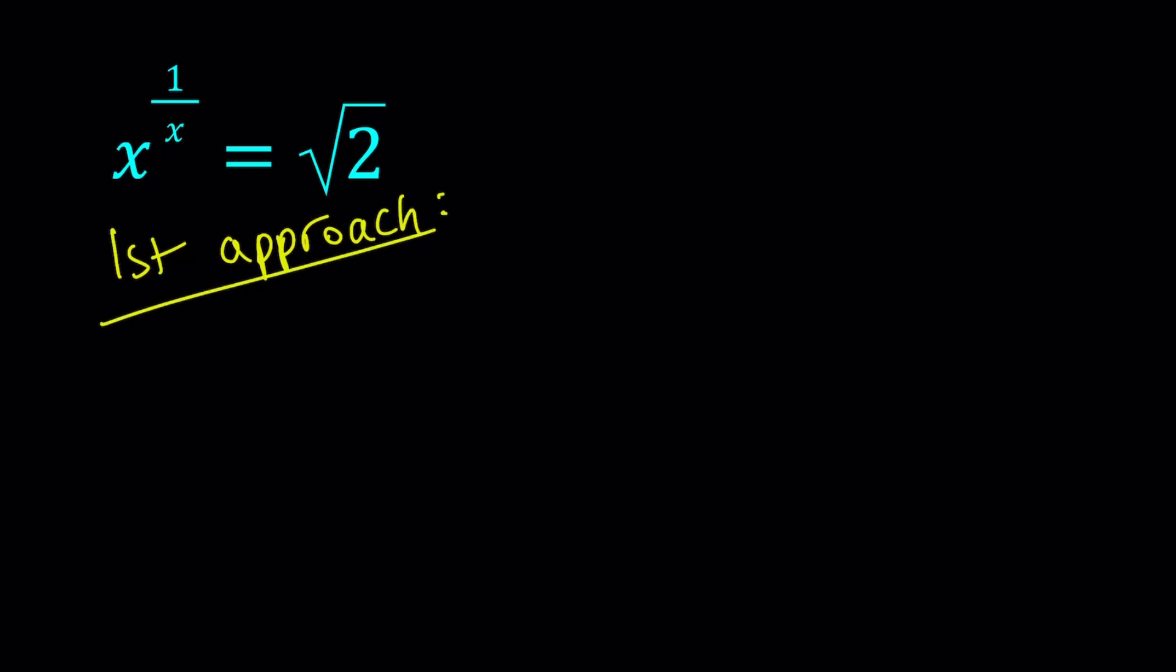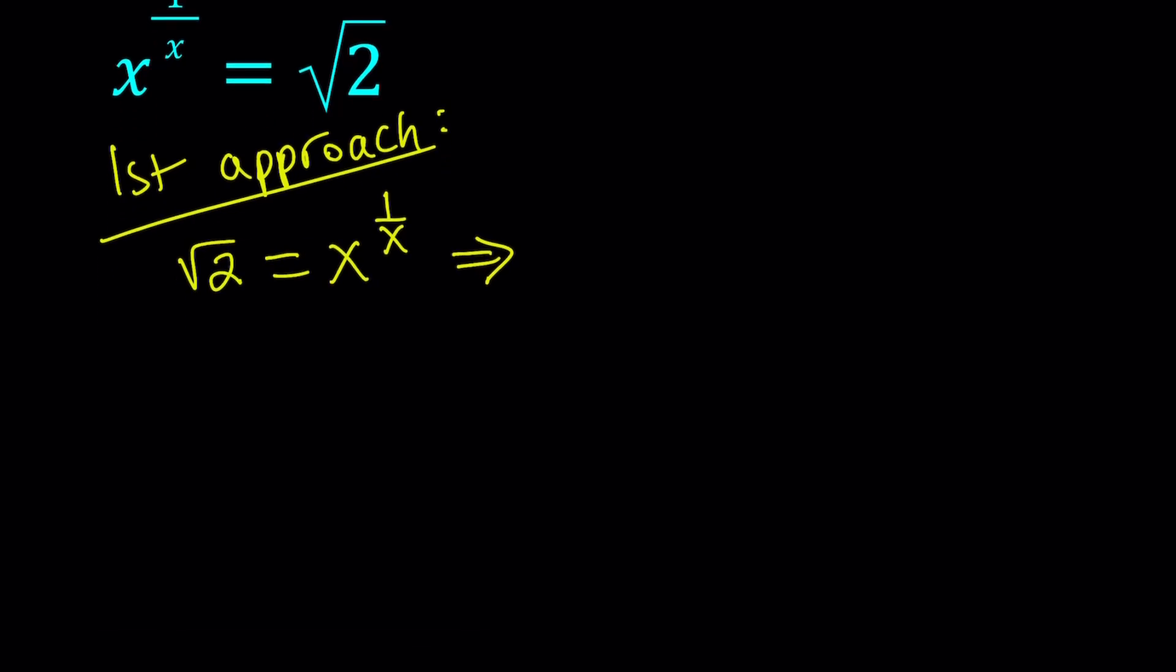For my first approach, I'm going to write my equation as square root of 2 equals x to the power 1 over x, and then raise both sides to the power x. We don't want x to be negative because that's going to cause some issues, and we don't want x to be 0 either. So x needs to be positive. If we raise both sides to the power x, the x cancels out here, and we end up with something simpler: square root of 2 to the power x equals x.